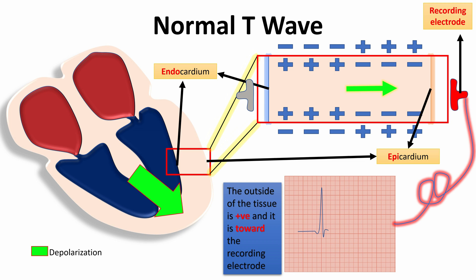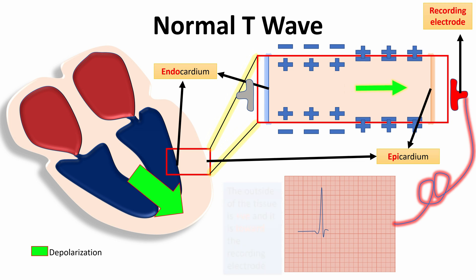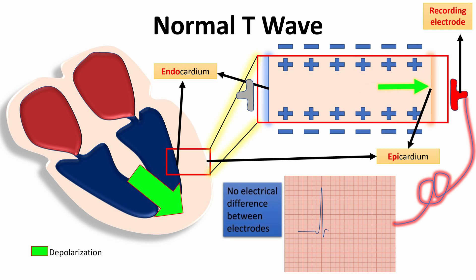After that, when the whole myocardial cells become depolarized, all of the cells will carry a negative wave on the outside, and there will be no difference between the two electrodes, and for the second time baseline will be drawn on the ECG paper, the ST segment.